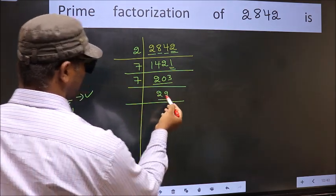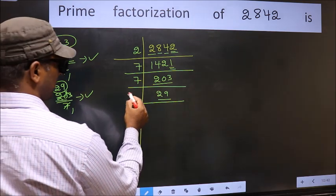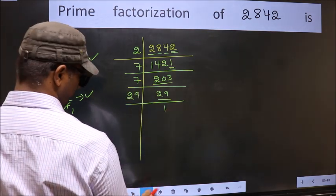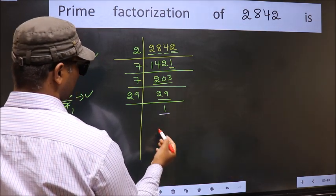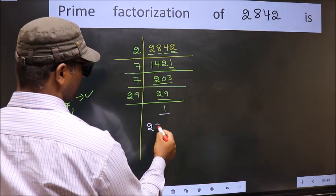Now we have 29. 29 is a prime number, so 29 once is 29. So we got 1 here. So the prime factorization of 2842...